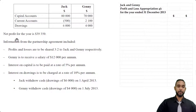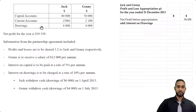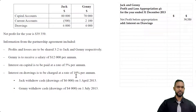The first thing that goes here is the net profit for the year of 39,350. To that we are going to add interest on drawings. The drawings figures are 6,000 and 4,000 for Jack and Jenny respectively. But remember, interest on drawings is to be charged at a rate of 10% per annum — so do we just multiply 10% by 6,000 and 4,000 respectively? Well, no.